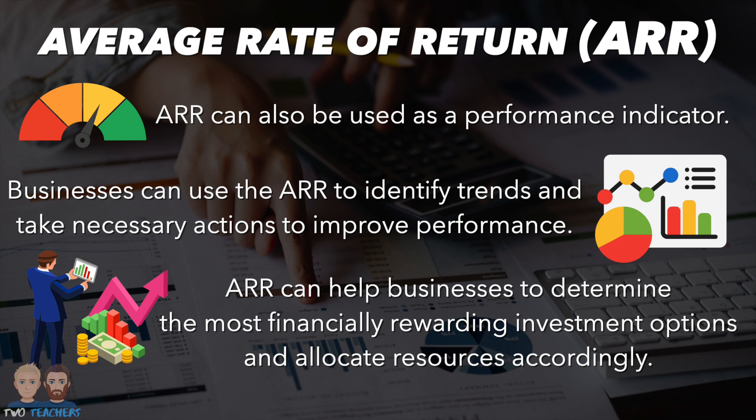For example, let's imagine a business was currently earning 2% on its cash savings in a bank account and was considering upgrading some of its equipment and machinery with this money. But after calculating the average rate of return for the investment into equipment and machinery, they found that they are only expecting to receive a 1% return. This quick calculation has allowed the business to make a more informed decision to leave the money in the savings account rather than invest it into equipment and machinery.